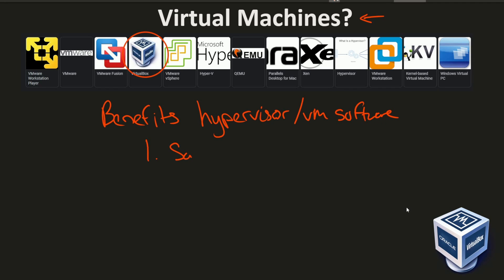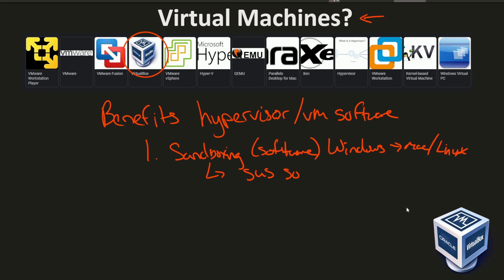Number one: sandboxing is a great thing that you get with virtual machines. Maybe you need to test some kind of software that you don't want to test on your computer, or perhaps you have a Windows computer and you can only test the software on a Mac or Linux computer. Now you can emulate Mac or Linux on that Windows computer strictly through software. You can also with sandboxing protect yourself from suspicious software.